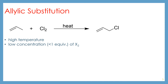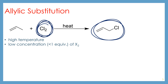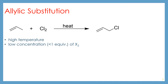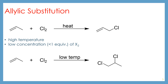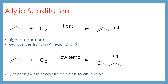This is required at high temperature and you typically want to have a low concentration of your halogen — less than one equivalent — because we don't need one equivalent of the chlorine molecule to make this. Whereas if you do this at low temperature and with one equivalent or greater of chlorine, you're going to end up with the electrophilic addition product.